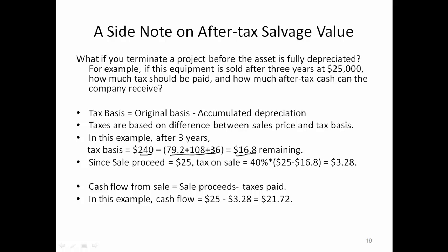That means on the books, the equipment still has $16,800 in remaining value. Since sale proceeds are $25,000, then $25,000 minus $16,800 is considered as profit the company makes from this transaction, and the IRS will tax that profit. So 40% multiplied by the difference between $25,000 and $16,800 gives a tax amount of $3,280. That's what the company has to pay in tax. So the company receives $25,000 in sales proceeds minus the tax, giving the after-tax cash inflow.